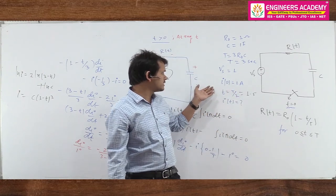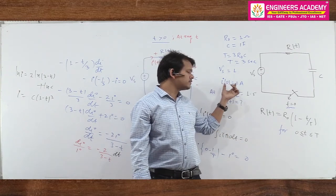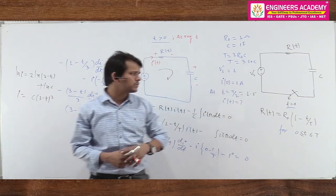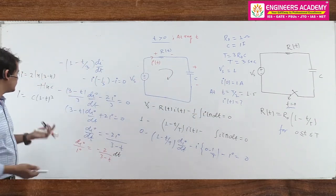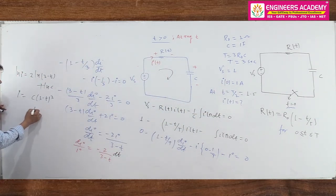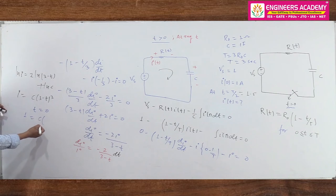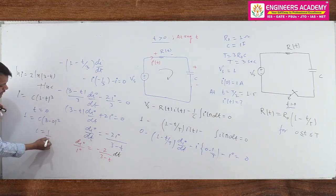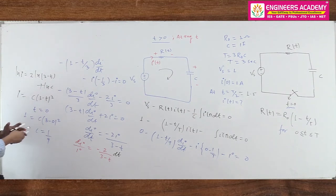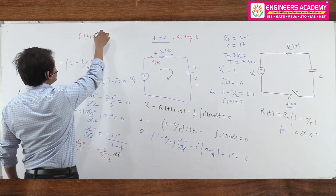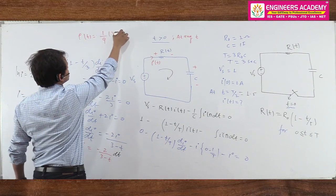Now applying the initial condition: i(0) = 1 ampere. Substituting t = 0: 1 = C·(3 - 0)² = C·9. Therefore C = 1/9. So the final expression is: i(t) = (1/9)·(3 - t)².